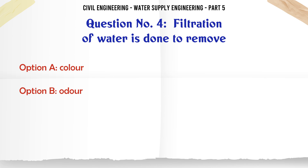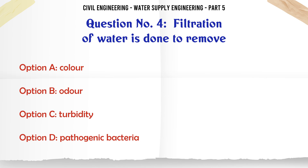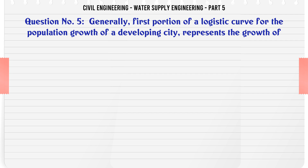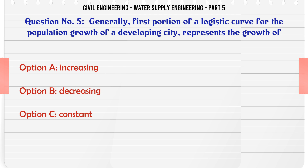Filtration of water is done to remove: A. Color, B. Odor, C. Turbidity, D. Pathogenic bacteria. The correct answer is Turbidity.